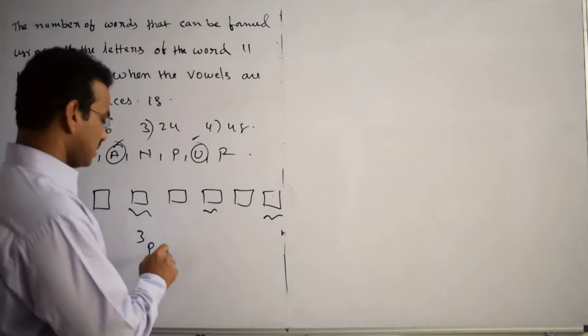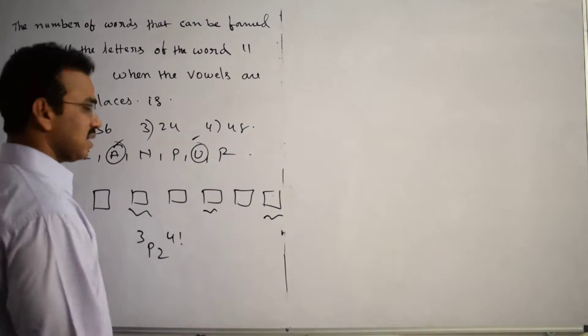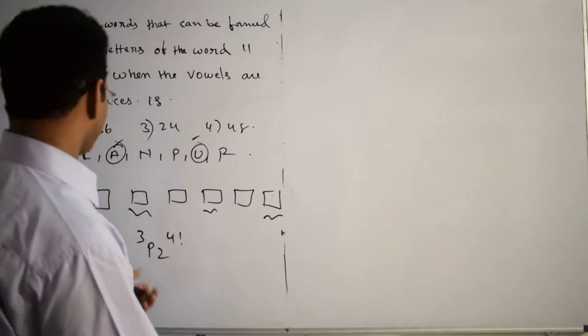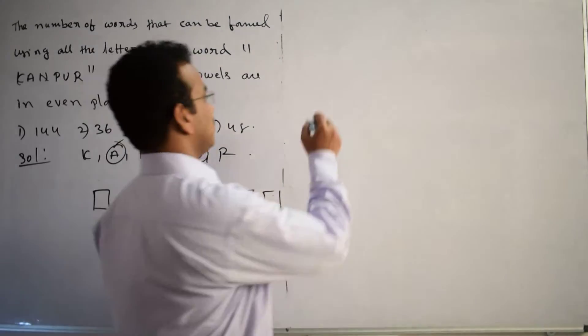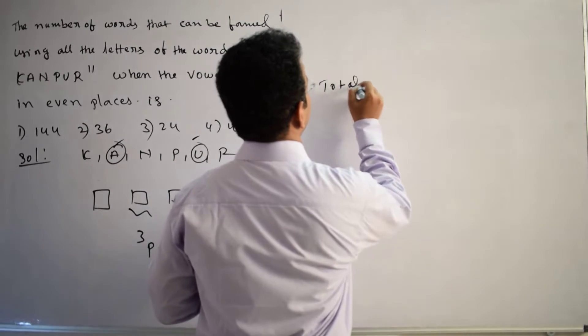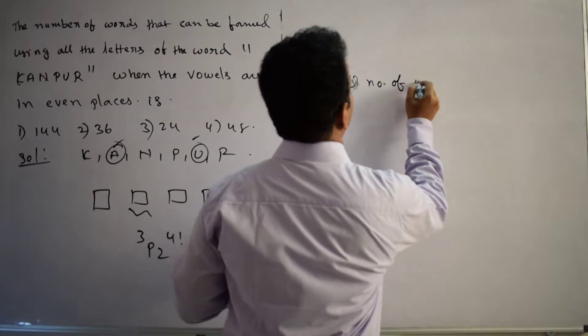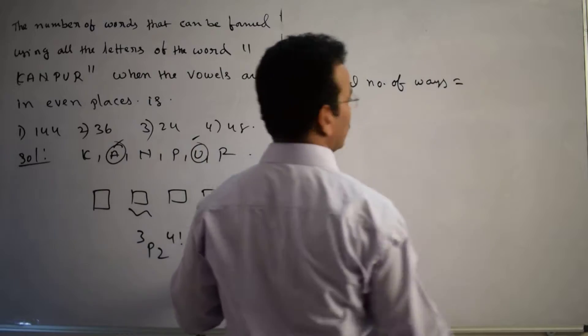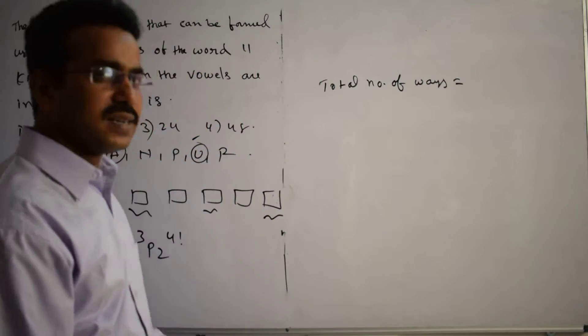So these are the total number of required ways. Total number of ways equals to, regarding the vowels, there are 3 places, even places.